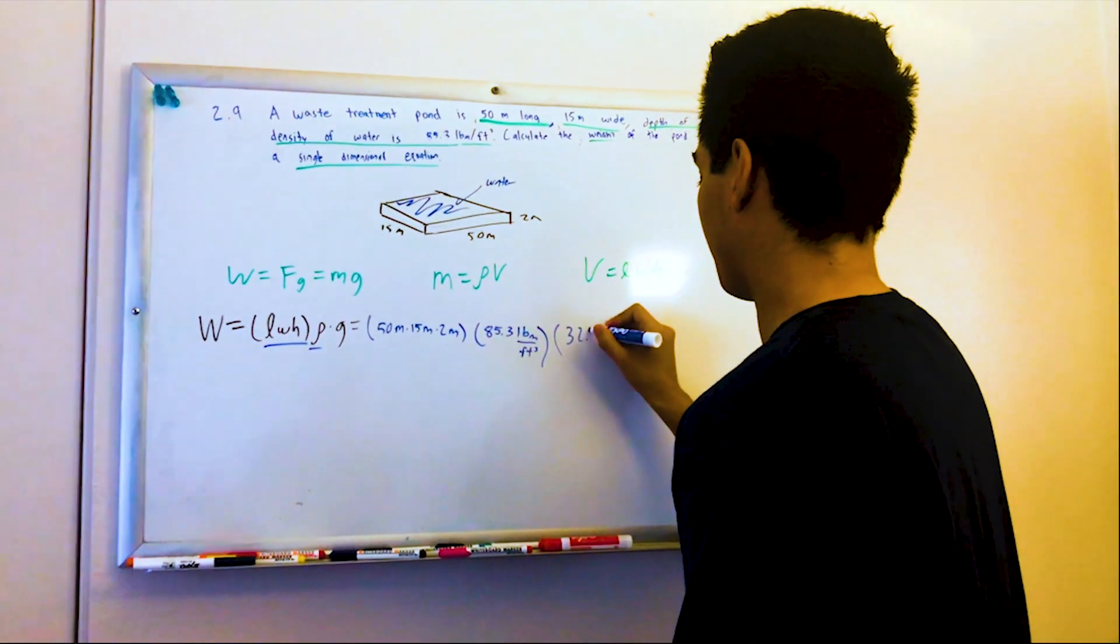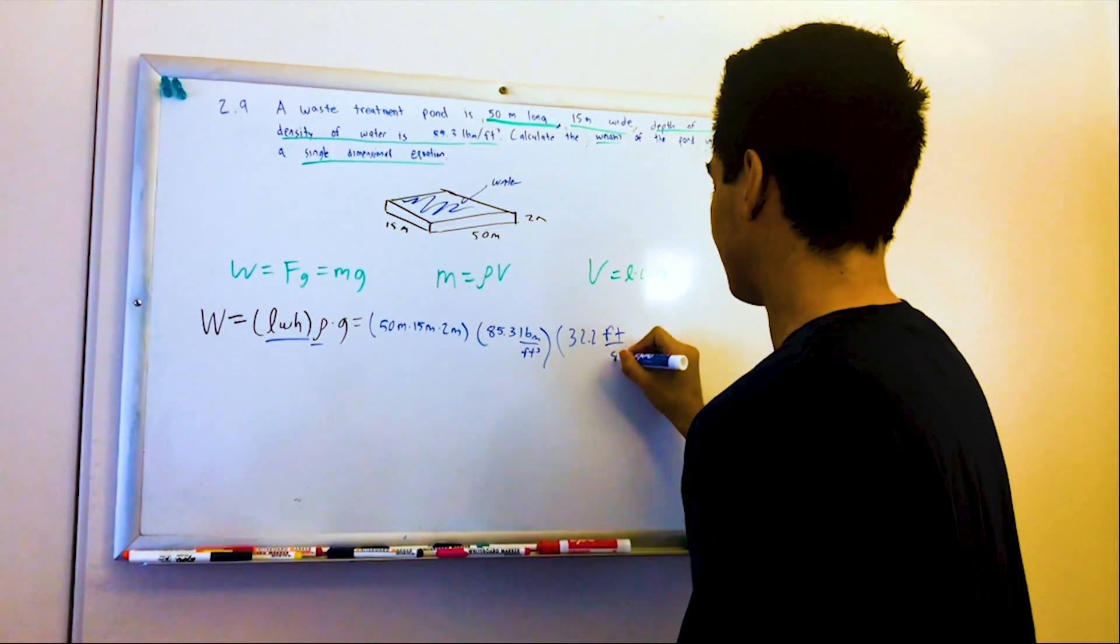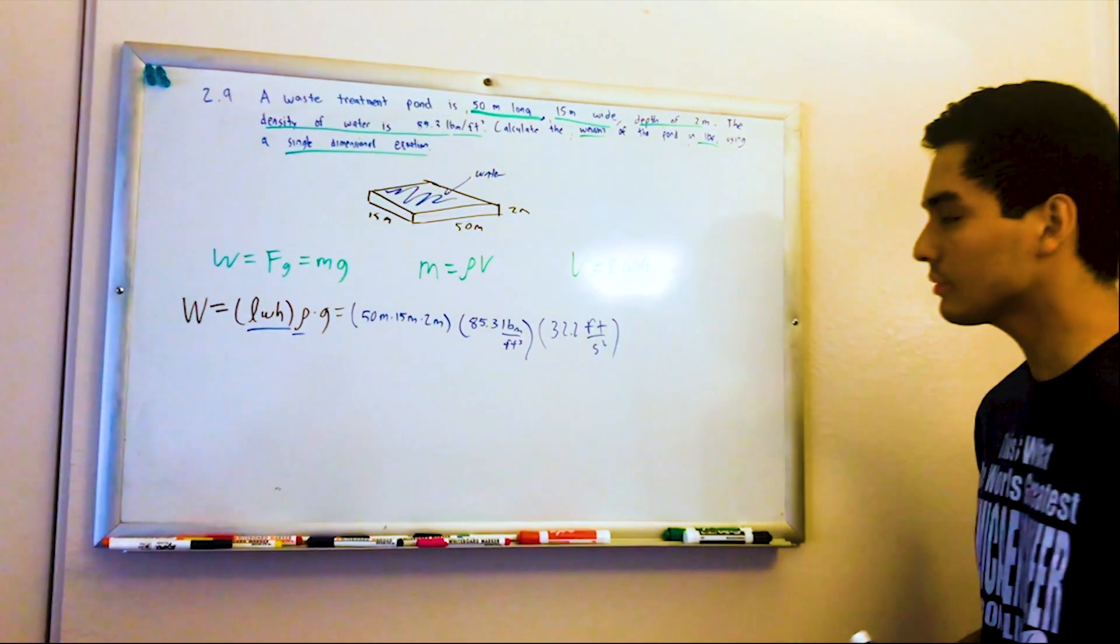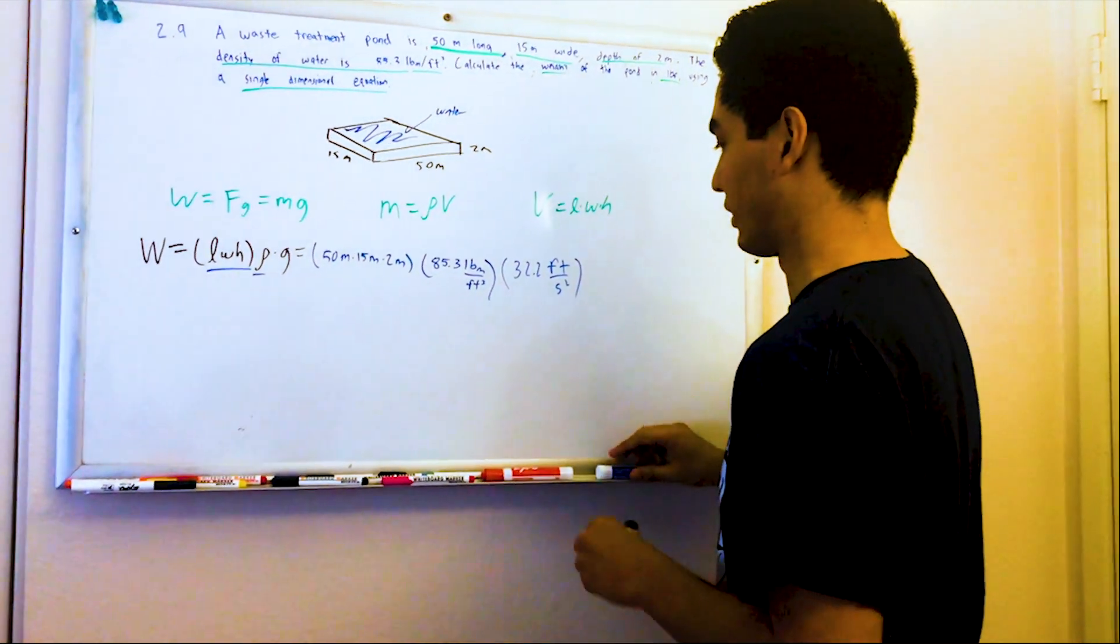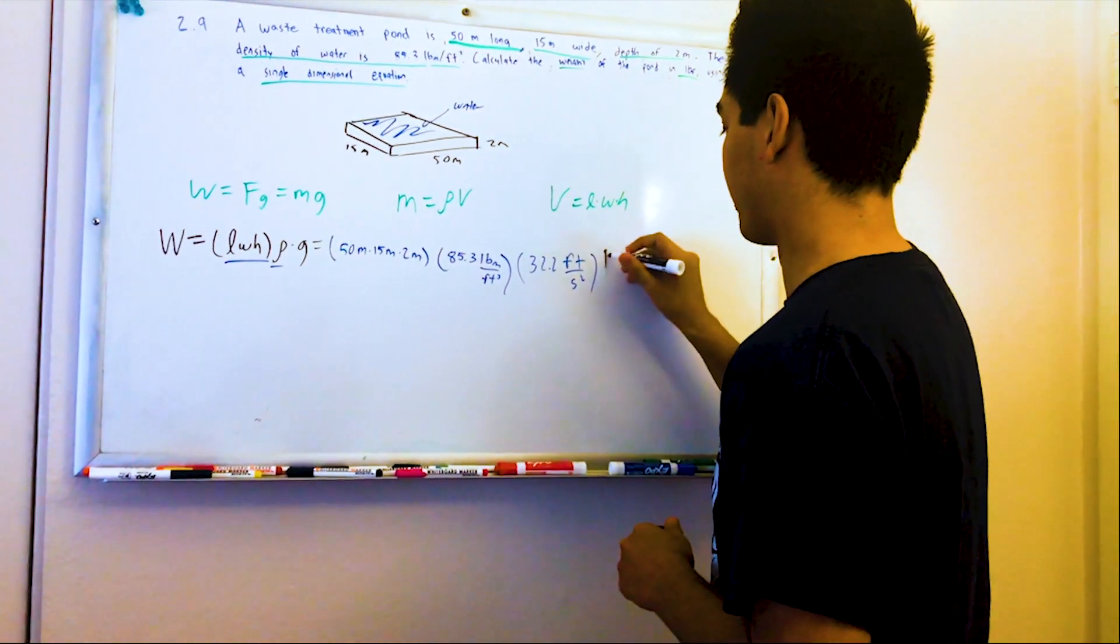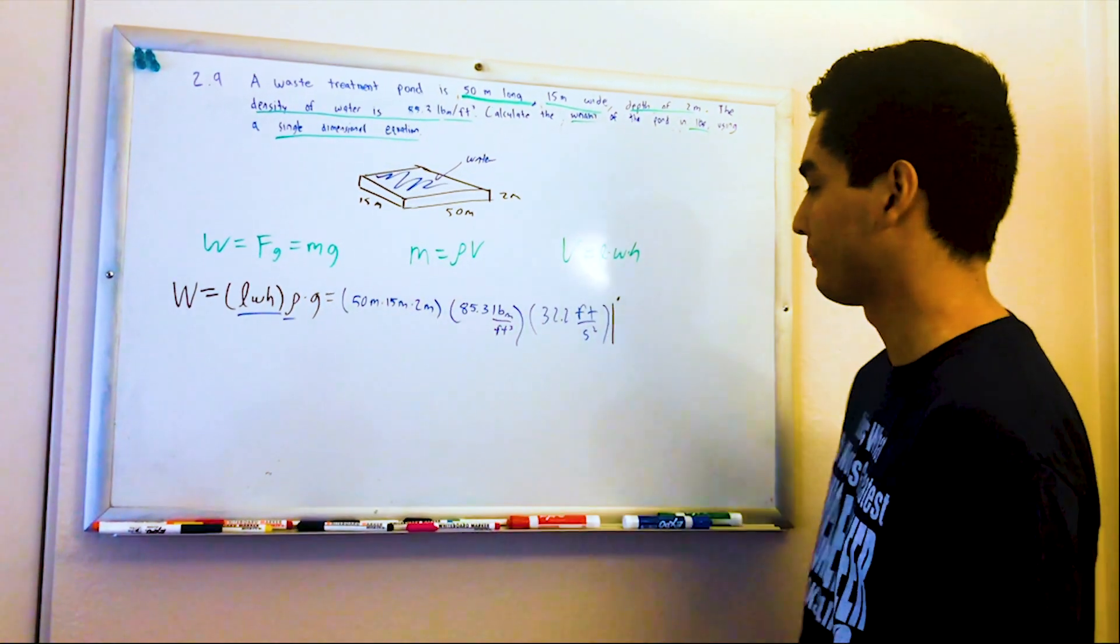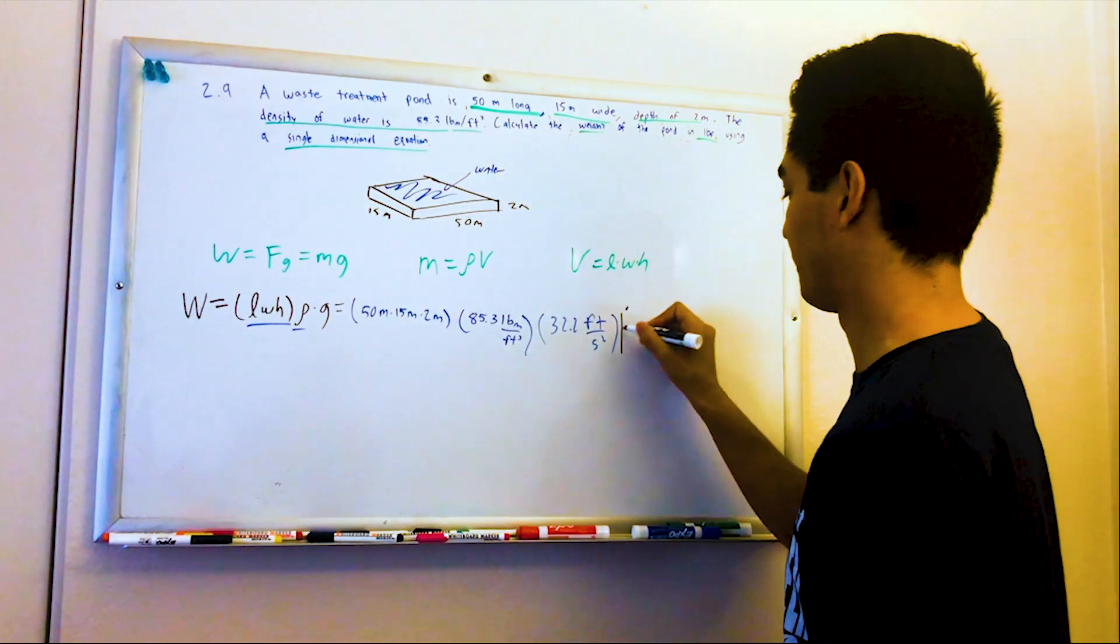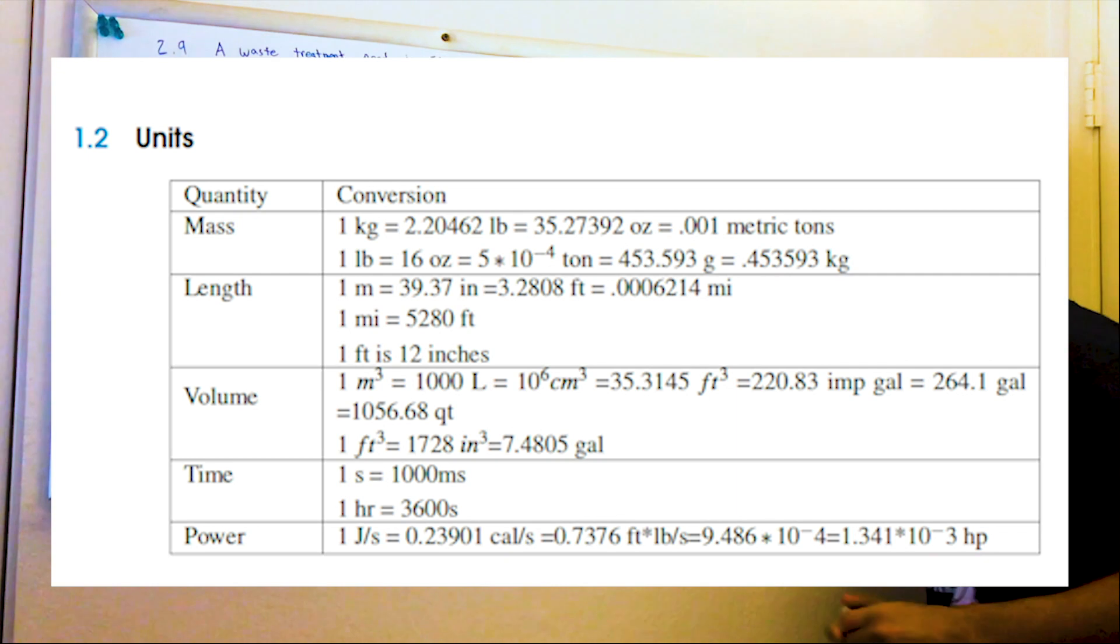All right, and it looks like we could just plug and chug, but since we know we got to cancel out stuff, we're going to convert meters cubed. So this is actually going to be meters cubed and cancel out with feet cubed. So from my centineer and conversion table, put a screenshot right there.